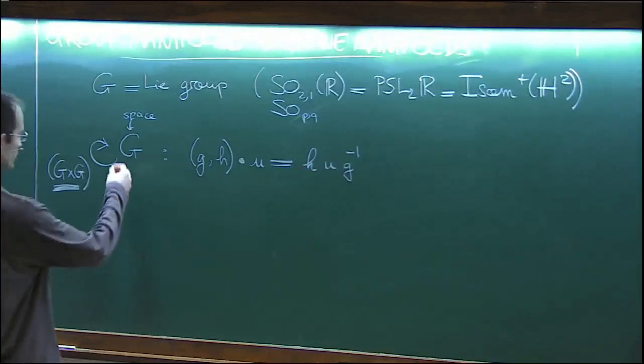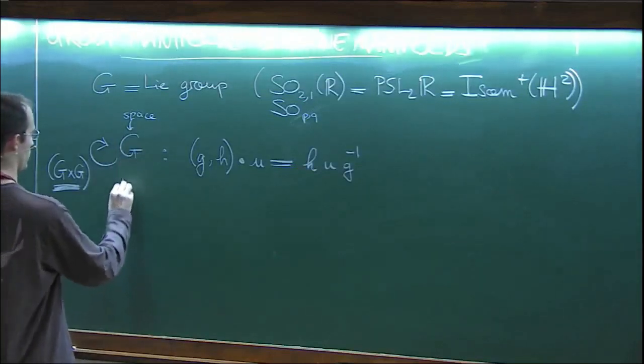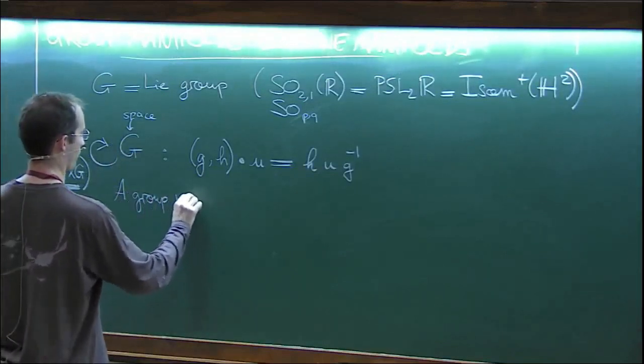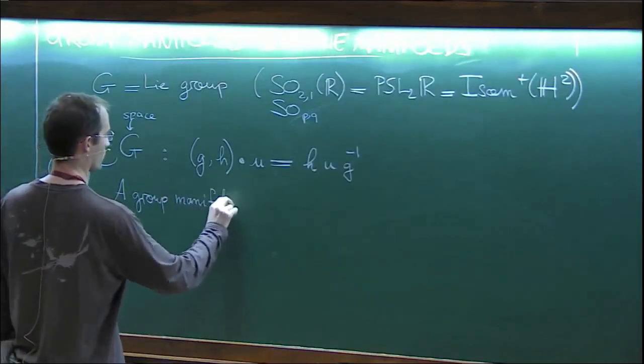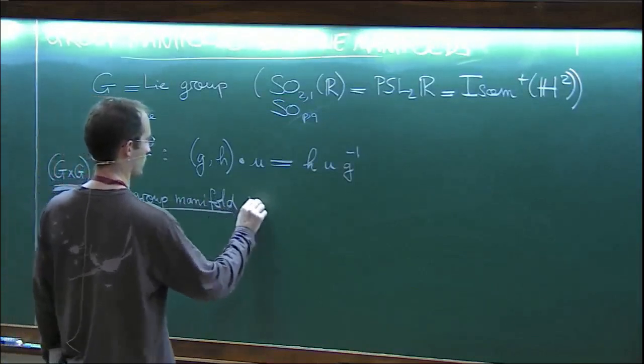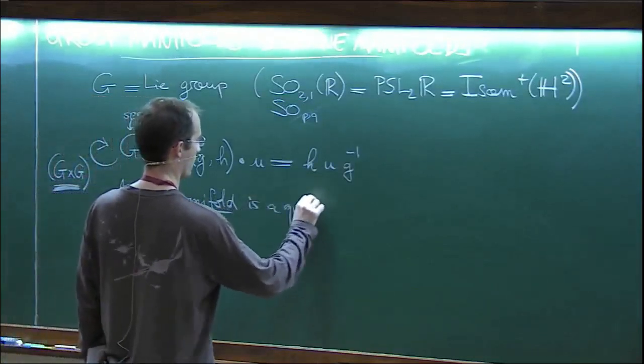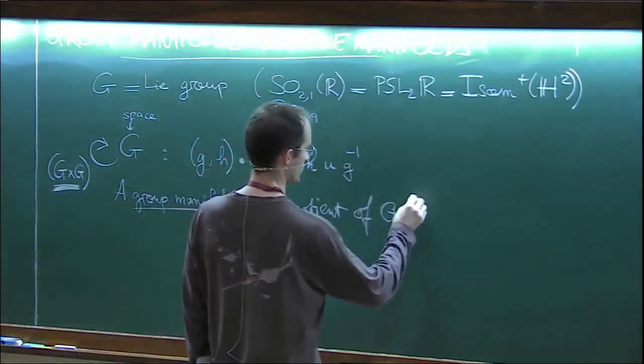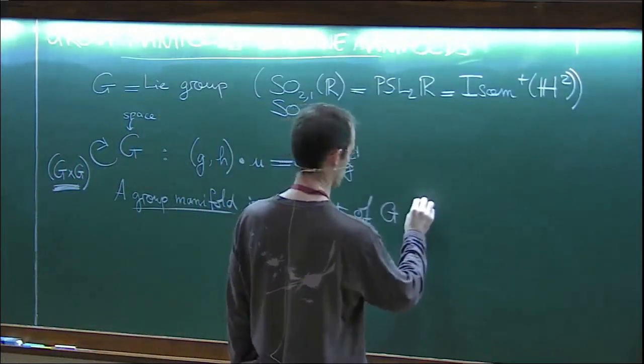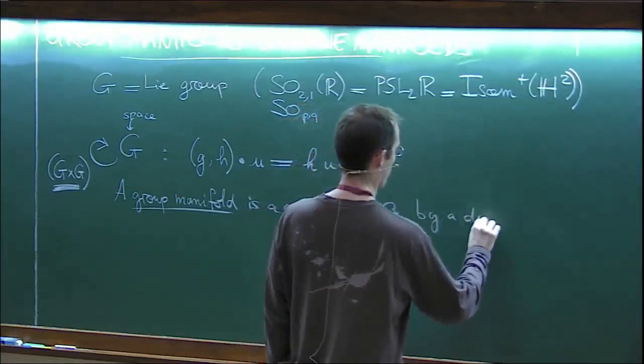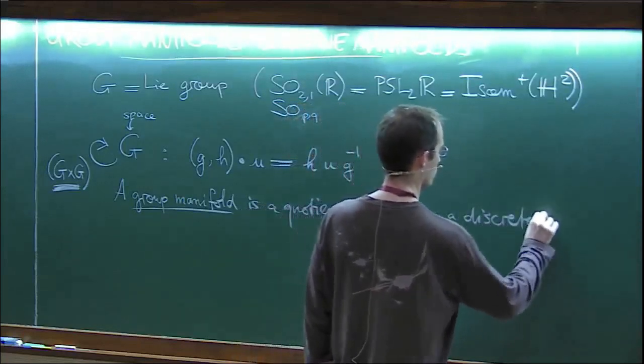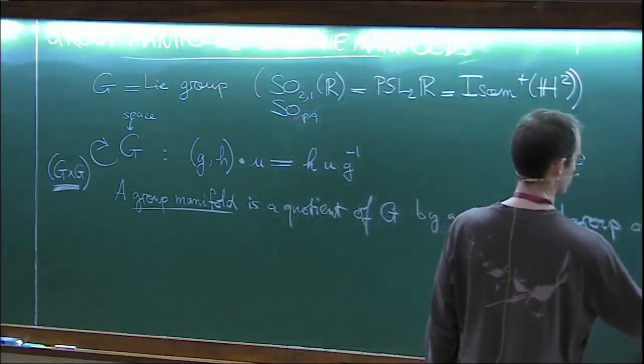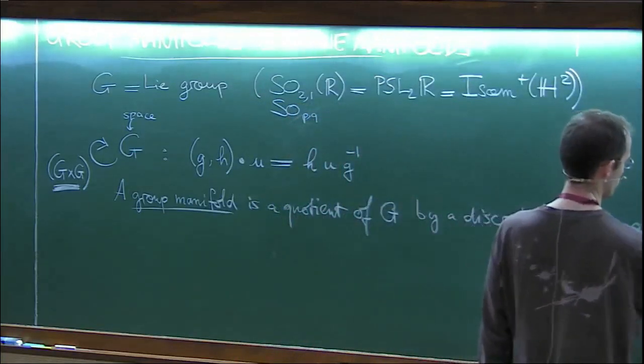So G cross G is the group of structural automorphisms of G as a space. And so a group manifold is a quotient of G by some discrete subgroup of the structure group G cross G.